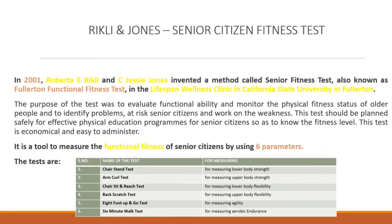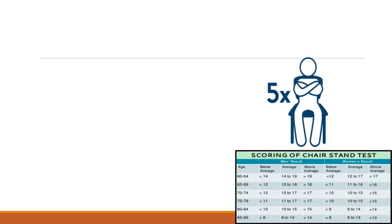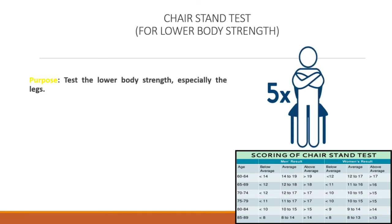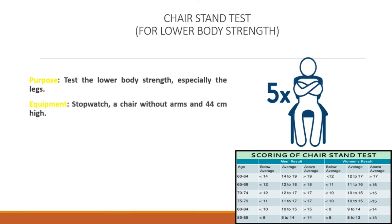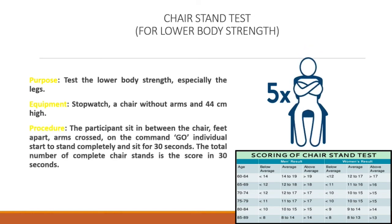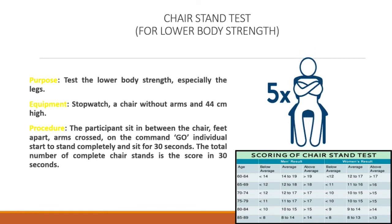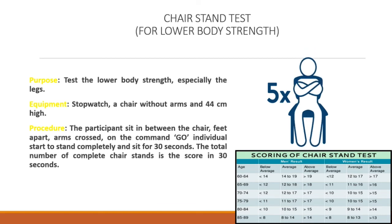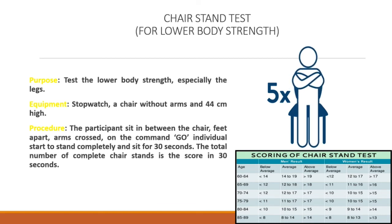Chair Stand Test for Lower Body Strength. Purpose: Test the lower body strength, especially the legs. Equipment: Stopwatch, a chair without arms and 44cm high. Procedure: The participant sits in the middle of the chair, feet apart, arms crossed. On the command go, individuals start to stand completely and sit for 30 seconds. The total number of complete chair stands in 30 seconds is the score.